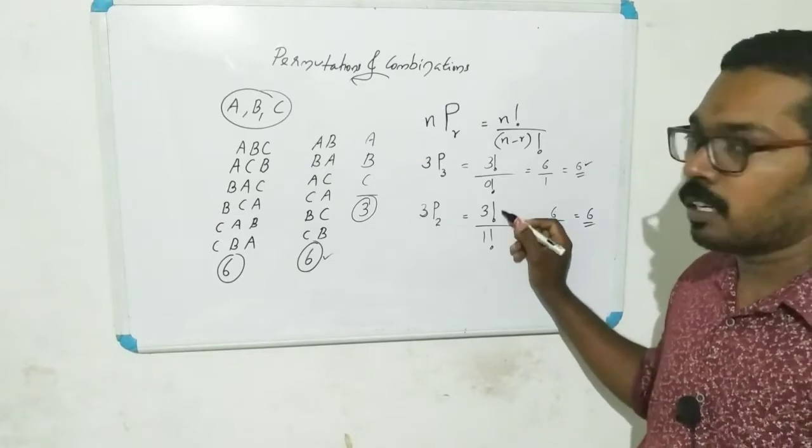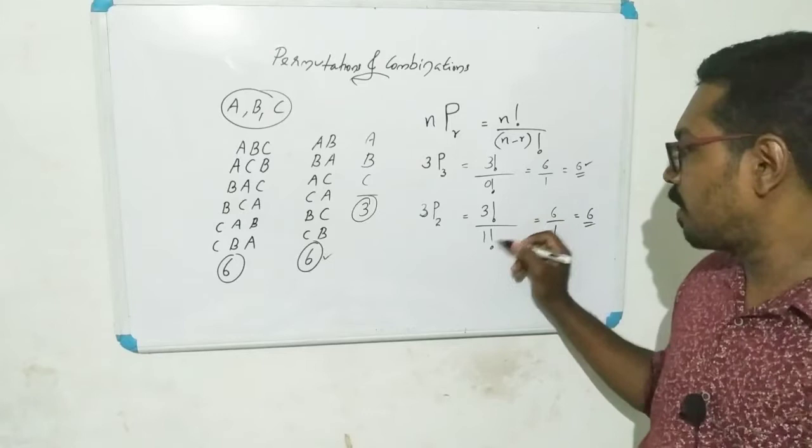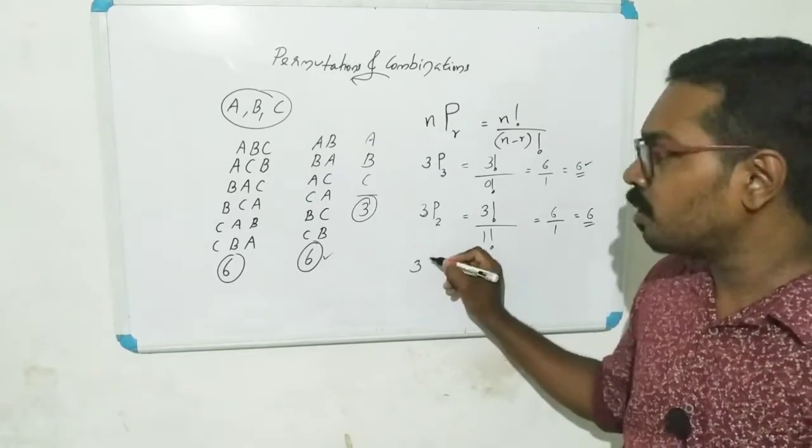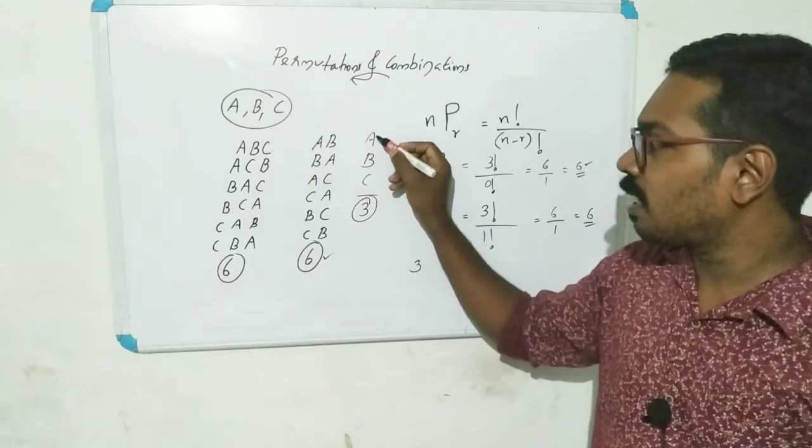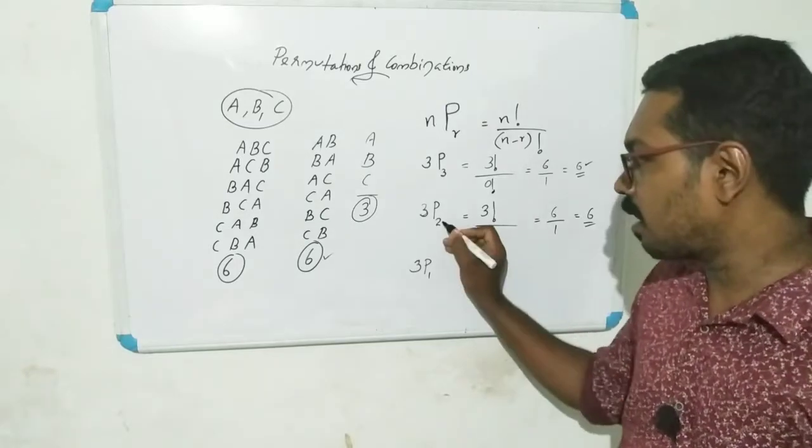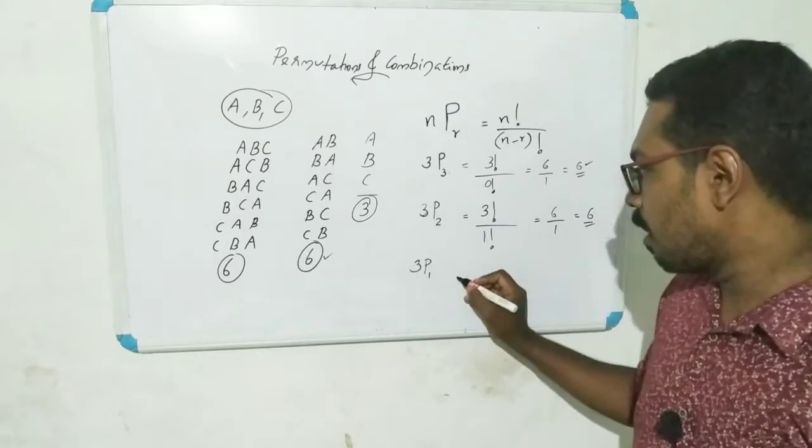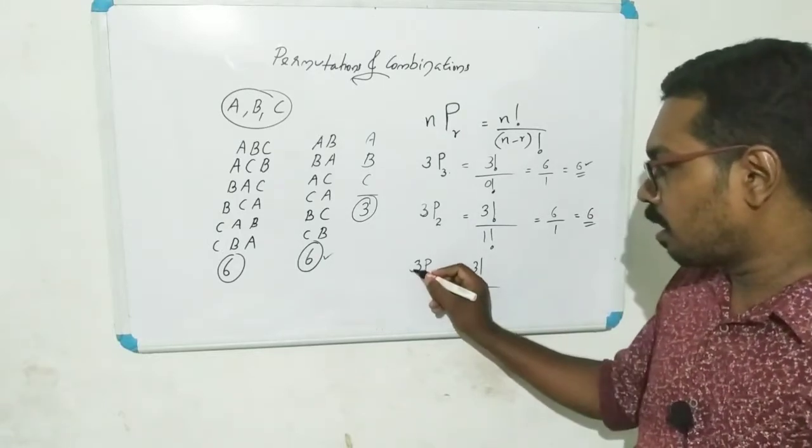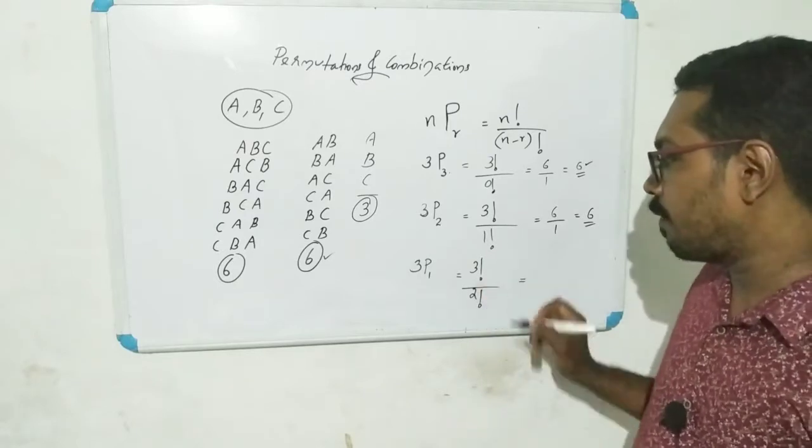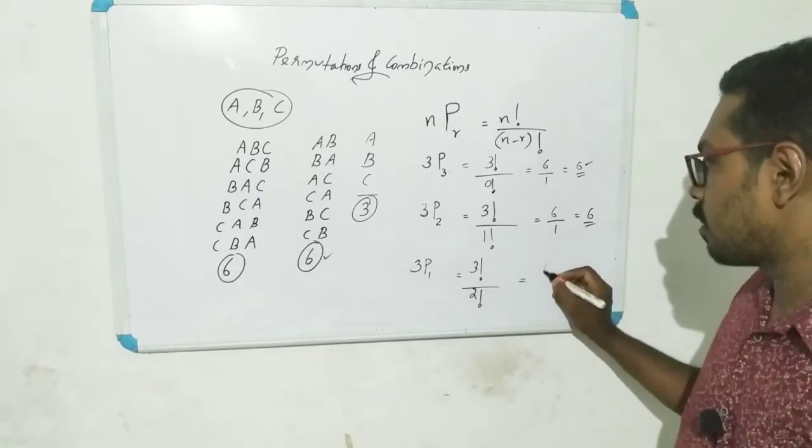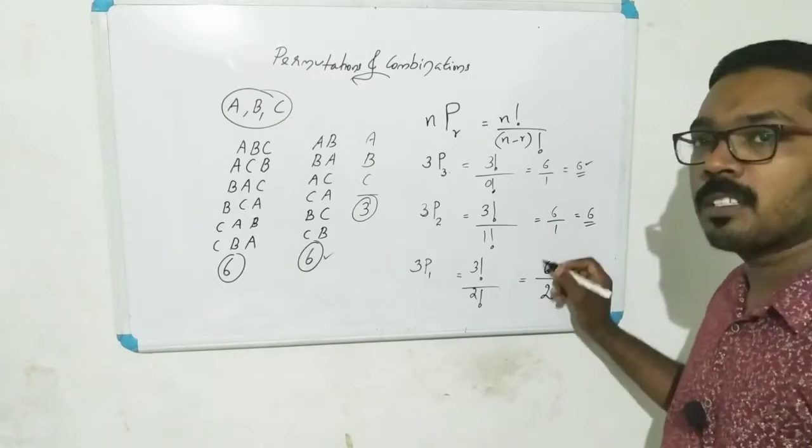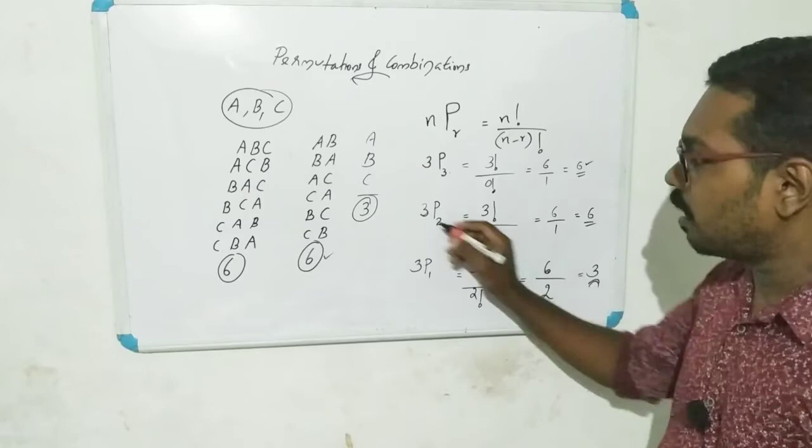Now let's take 3P2. If we have three letters and arrange two at a time, 3P2 equals three factorial divided by three minus two factorial. Three minus two is one. Three factorial is six, one factorial is one, so six divided by one equals six. For 3P1, three factorial divided by two factorial equals six divided by two, which is three.